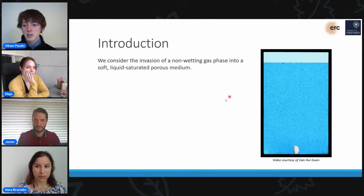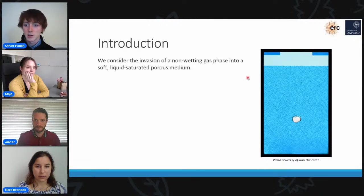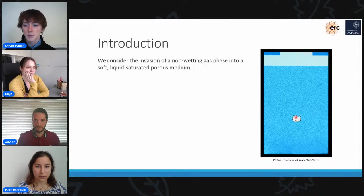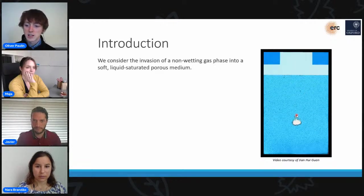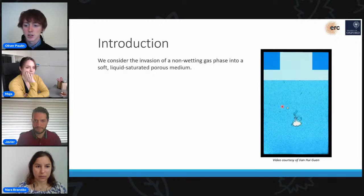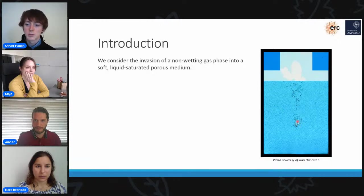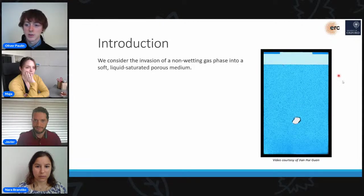What we then do is that we increase the confinement on the packing through the use of this permeable piston at the top here. What we see is that as the piston is applied and the confinement increases, firstly the bubble is trapped, it stops rising. And then as the confinement increases further, the gas starts to leak into the pore space before eventually the cavity ruptures, at which point all the gas is forced into the pore space, and then it just leaks out the top of the flow cell.